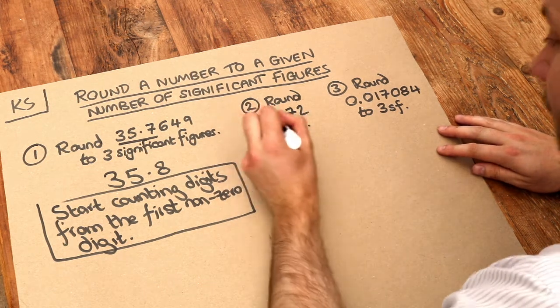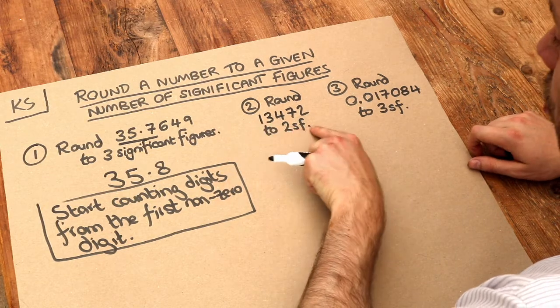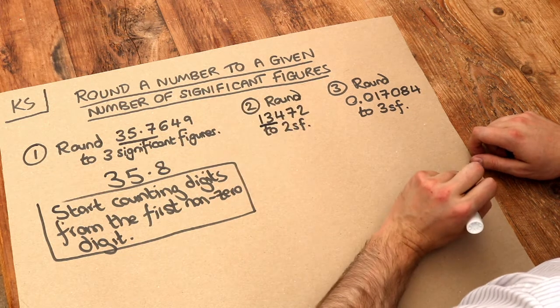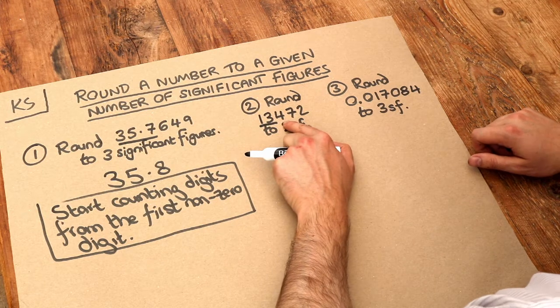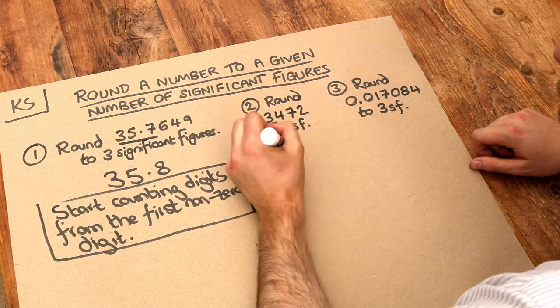So again, we start counting from the first non-zero digit, which is this first digit. And we take two of those digits, because we want to round to two significant figures. 1, 2. And then we look at the digit just after that one we underlined. That's a 4. Now is that 5 or greater? No it isn't. So this three stays as three. So we write 1, 3.